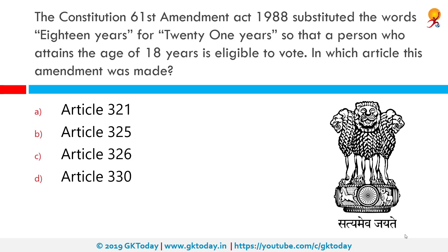The Constitution's 61st Amendment Act 1988 substituted the words '18 years' for '21 years' so that a person who attains the age of 18 is eligible to vote. This amendment was made in Article 326. The 61st Amendment lowered the voting age for elections to the Lok Sabha and state legislative assemblies from 21 years to 18 years by amending Article 326, which concerns elections to the Lok Sabha and the assemblies.